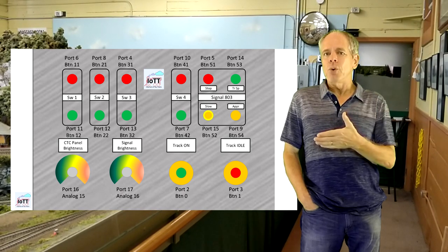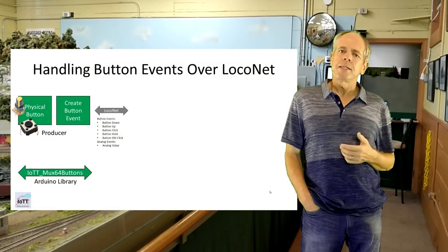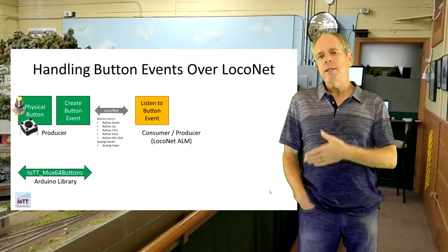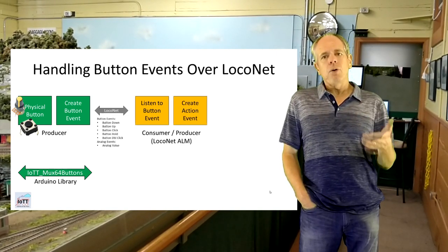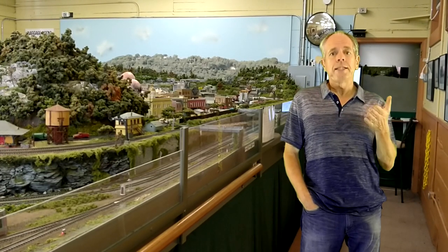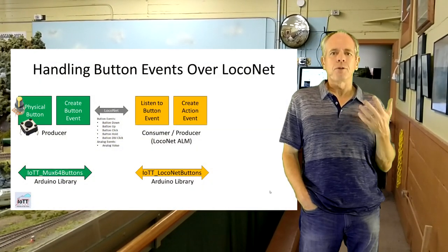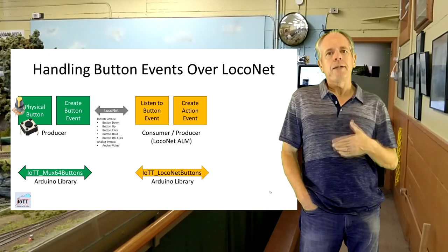The only thing you need to make sure is that all button addresses are unique, meaning only one button in your LocoNet system should have a particular button number. The button event message that is sent over LocoNet can now be seen by all the other network participants and one or maybe several nodes may react on the message. Let's say we want to use button 41 to set switch 4 to thrown when the button is pressed. So we have a logic node somewhere that listens for event messages from button 41. As soon as it receives the button down event from button 41, it issues a thrown command for switch number 4.